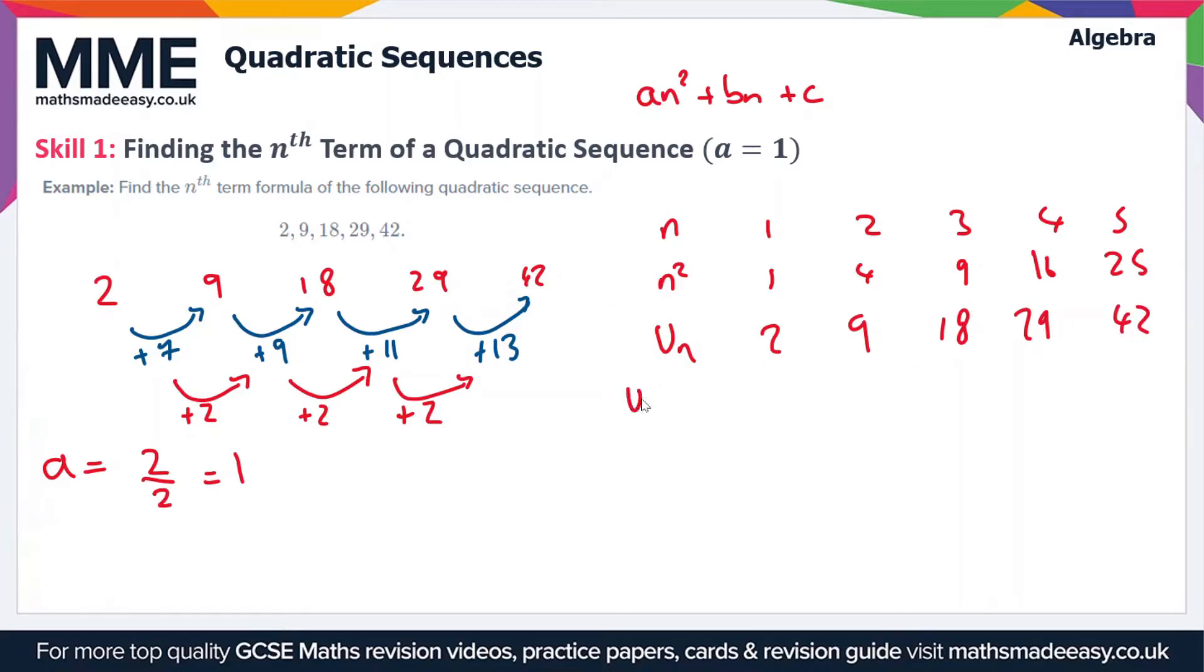And then finally under this we're going to write UN minus N squared. So this is the terms of the original sequence minus N squared. So this is going to be 2 minus 1 which is 1, 9 minus 4 which is 5, 18 minus 9 which is 9 and 29 minus 16 is 13 and 42 minus 25 is 17.